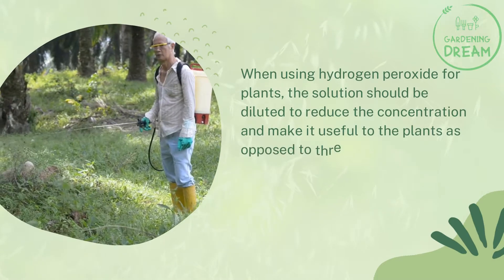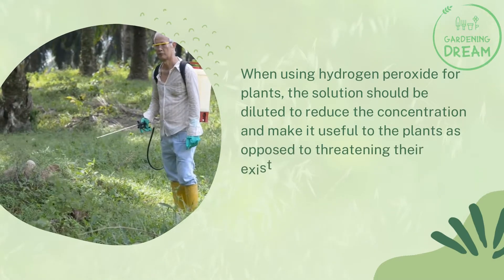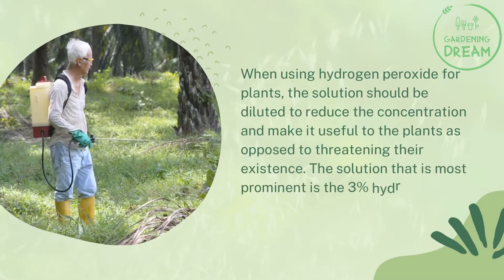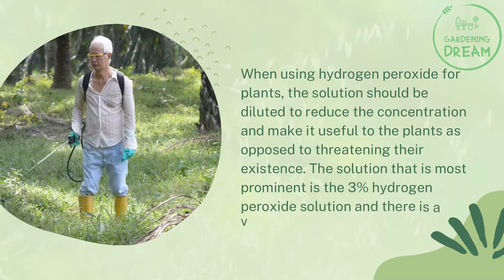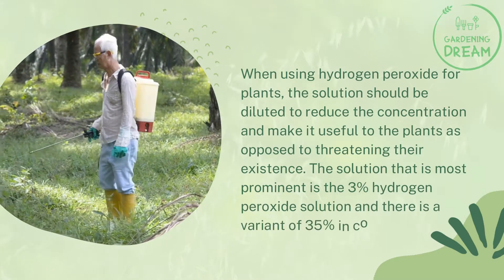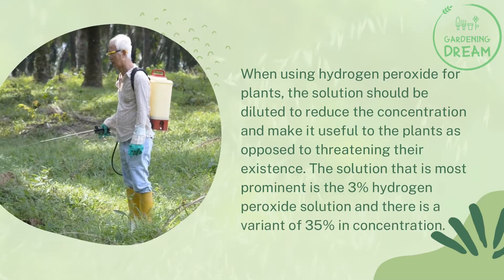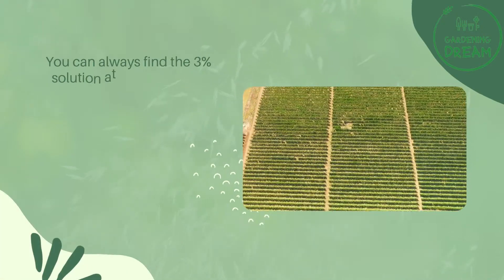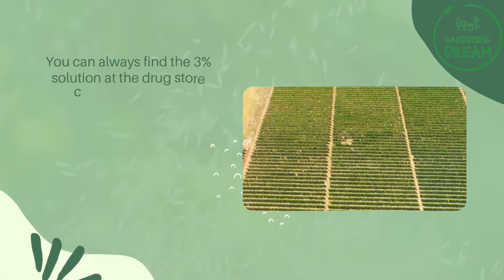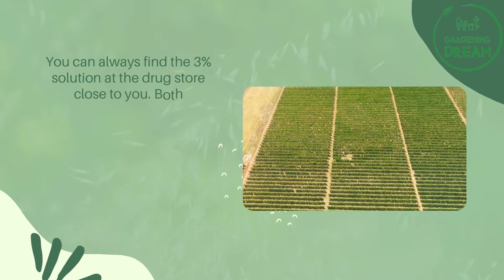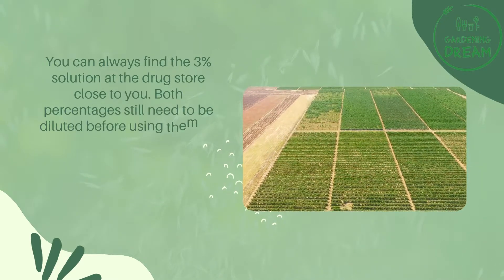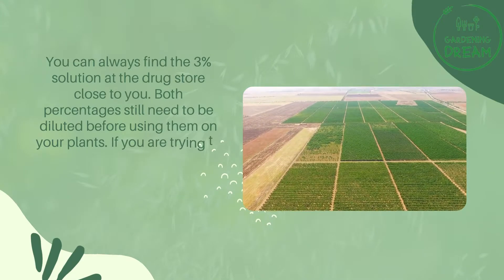The most prominent solution is the 3% hydrogen peroxide solution, and there is also a variant at 35% concentration. You can always find the 3% solution at the drugstore close to you. Both percentages still need to be diluted before using them on your plants.